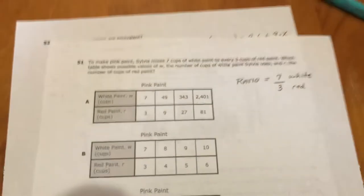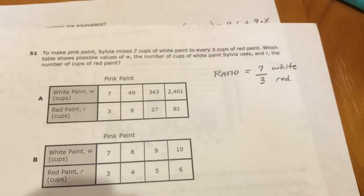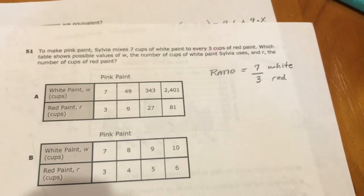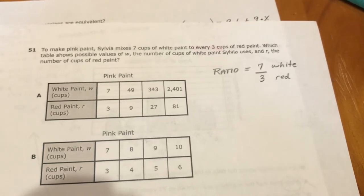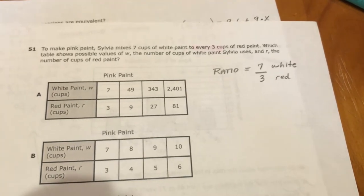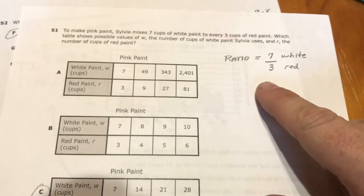It says to make pink paint, Sylvia mixes 7 cups of white paint to every 3 cups of red paint. Which table shows the possible values of W, the number of cups of white paint Sylvia uses, and R, the number of cups of red paint? So your original ratio is 7 white to 3 red.